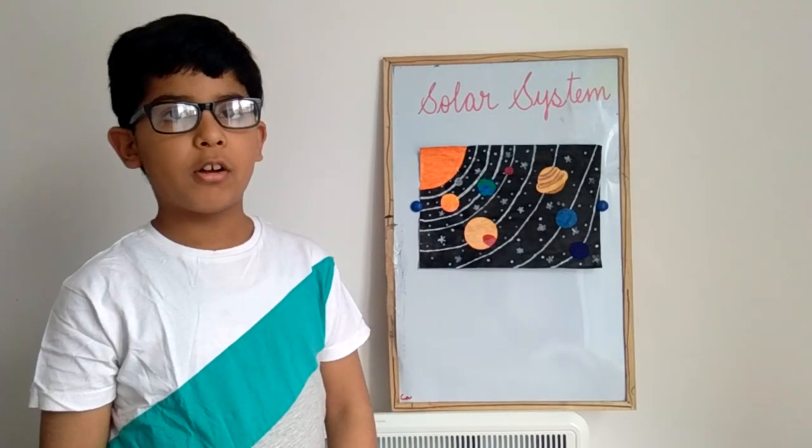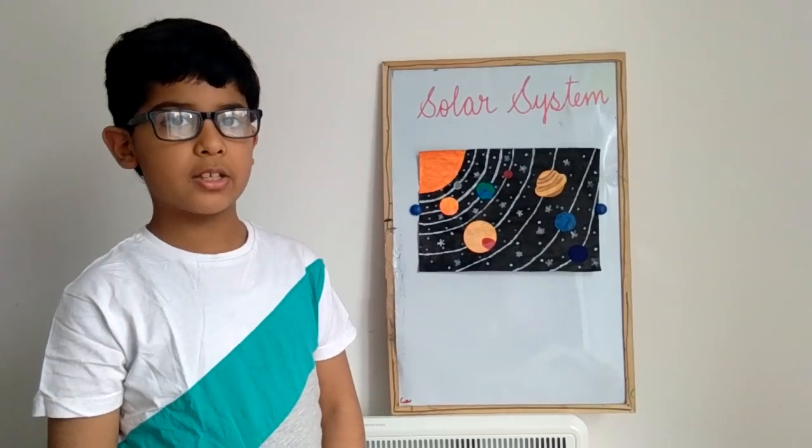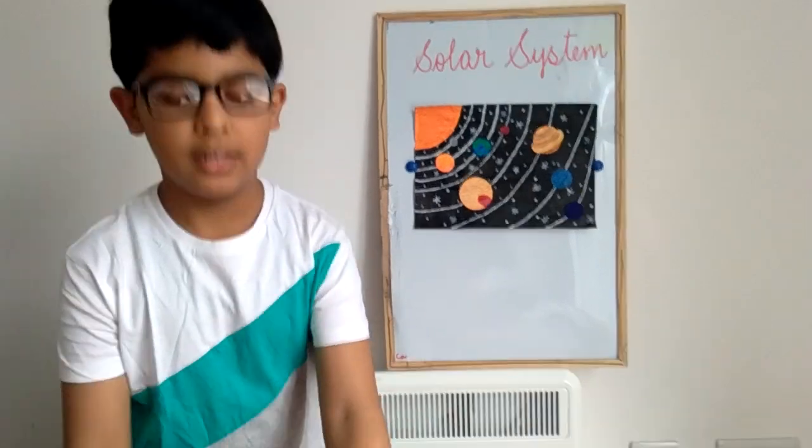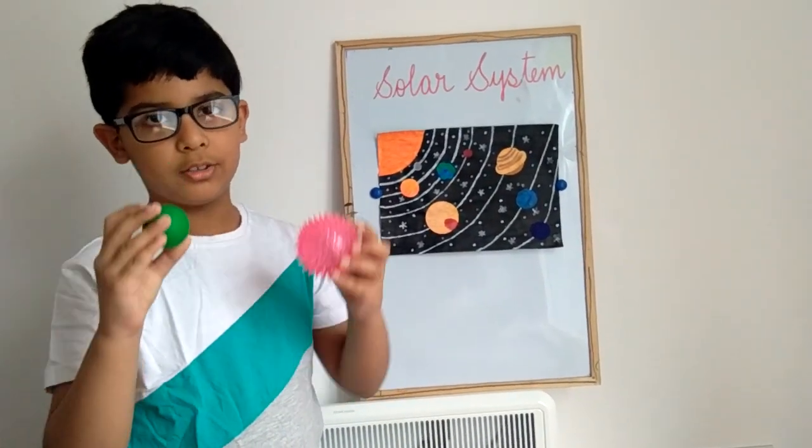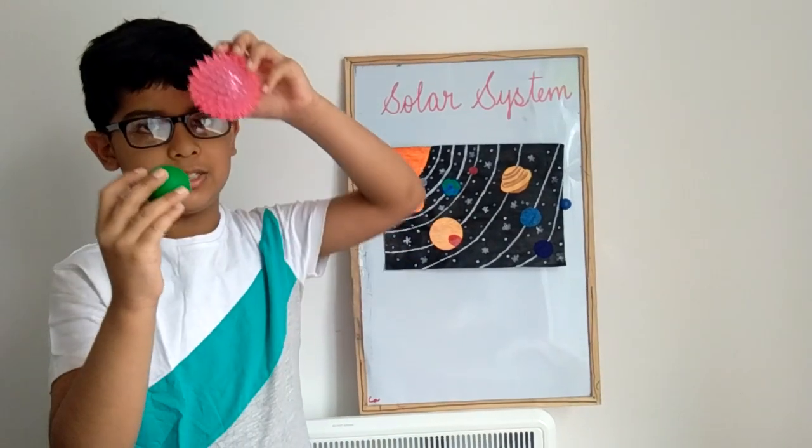It revolves around the sun and completes a cycle in 365 days like this. Think this is the sun and this is the Earth. It revolves like this.